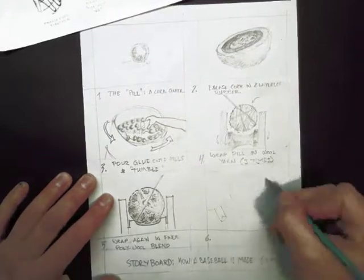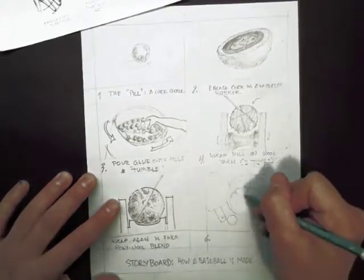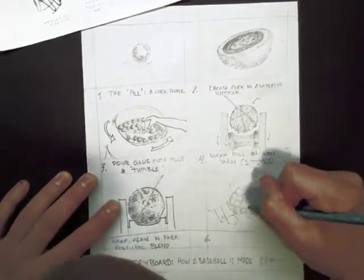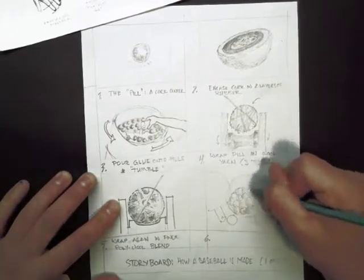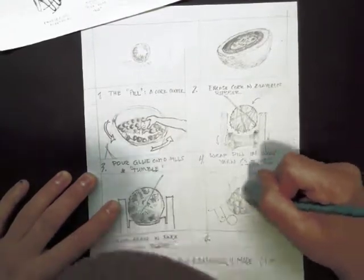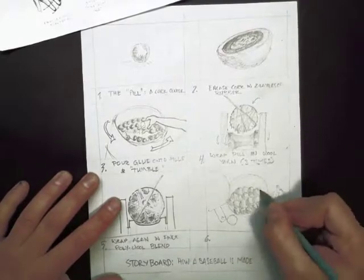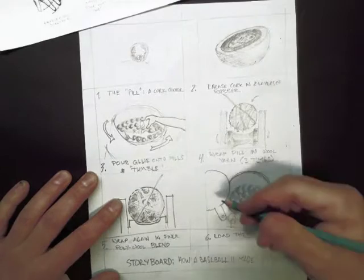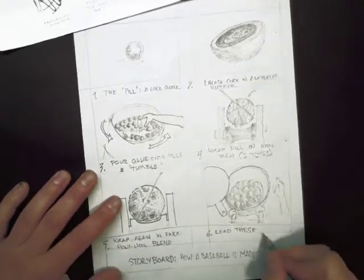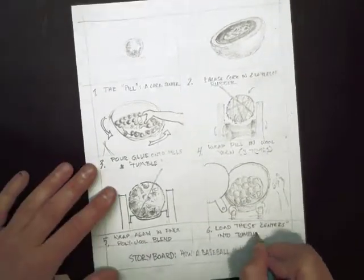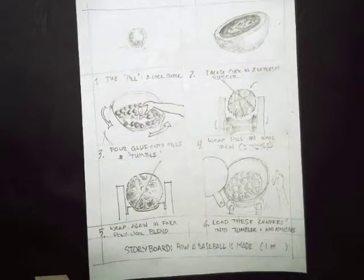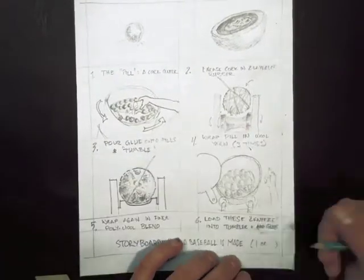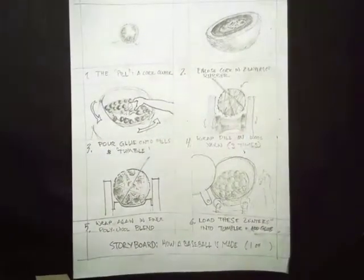Then the centers are tumbled with glue so again I want to show a hand operating the equipment here. Keep your hand diagrammatic and if you need to check the how to draw hands handout sheet or just draw your own hand enough times that you have a sense of the underlying geometry. So those centers are loaded into another tumbler with adhesive or glue.